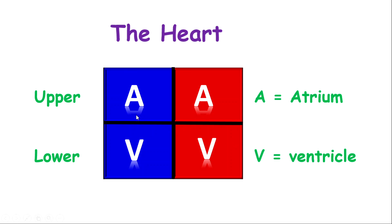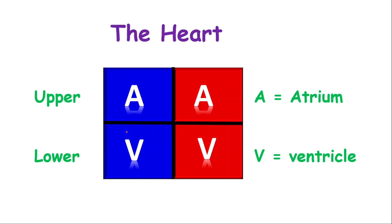The upper chambers and the lower chambers are separated by what we call valves. There are valves that separate the upper from the lower. The upper chambers are called atria and the lower chambers are called ventricles.